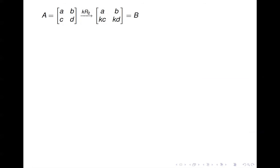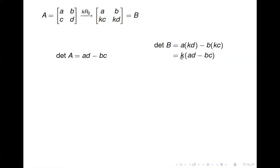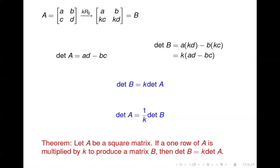The third row operation is multiplying a row by a constant K. The determinant of A is AD minus BC. The determinant of B, where row two is multiplied by K, is A times KD minus B times KC. We factor out K and get K times (AD minus BC), so det(B) equals K times det(A). Going backwards, det(A) equals one over K times det(B). The theorem: if a row of A is multiplied by K to produce B, then det(B) equals K times det(A), for any square matrix A.